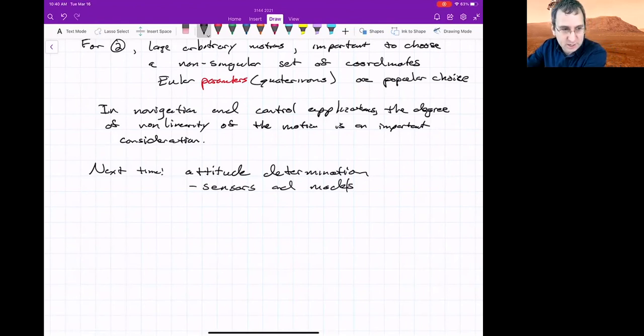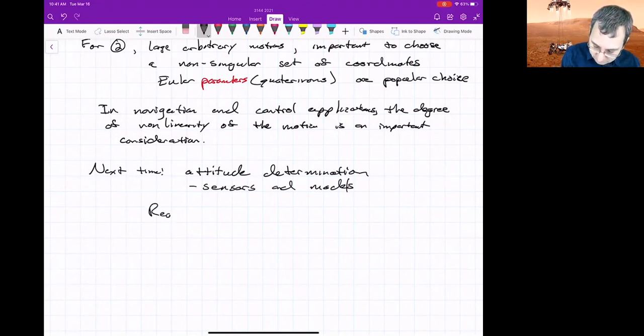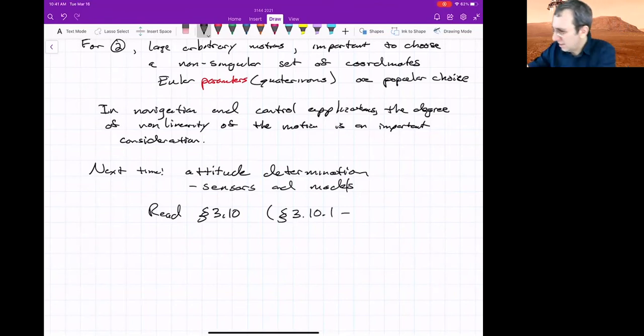We are still in chapter three, the part to read, and this is in the 2018 book, be looking at section 3.10. Section 3.10 talks about the triad method. That's the first one we'll talk about. And then the Davenport's Q method. So read section 3.10.1 through 3.10.3. And then other things are kind of based on that. The Q method, as the name might imply in terms of quaternions, it's a quaternion based method. So yeah, read section 3.10.